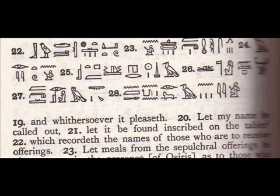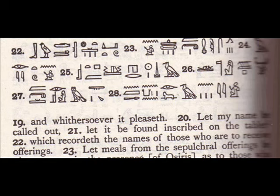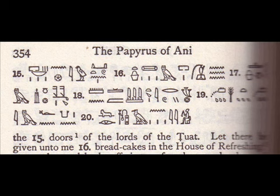Page 346, number 22 — the translation is: 'which recordeth the names of those who are to receive offerings,' and you can see that the sign D37 is last, so that stands for 'receive offerings' — once again, to give. An offering is probably linked to festivals, but we still have 'to give,' the same meaning. Moving to page 354, number 15, the translation is: 'Those of the lords of the Tuat, let there be given unto me,' and you can see that the symbol is at the end, standing for 'giving unto me' — once again, give, to give.